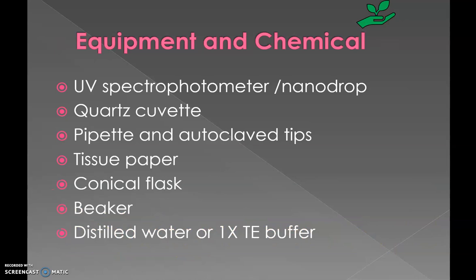Equipment and chemicals required for quantification are: UV spectrophotometer or nanodrop, cuvette, pipette and autoclavable tips, tissue paper, conical flask and beaker, and distilled water or 1x TE buffer.